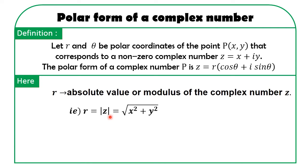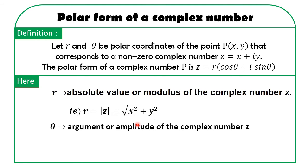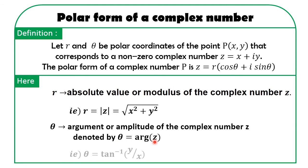We know how to find the modulus of z, that is the root of x² + y². And here theta is called the argument or amplitude of the complex number z, denoted by θ = arg(z), that is θ = tan⁻¹(y/x).